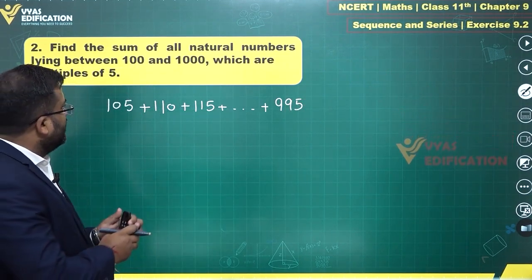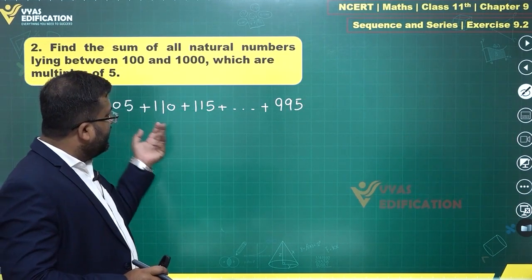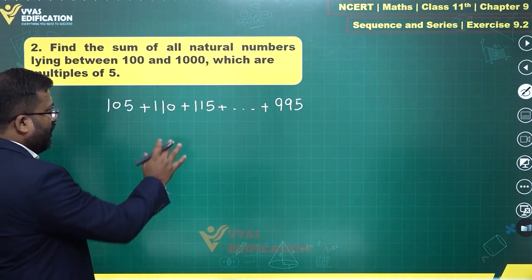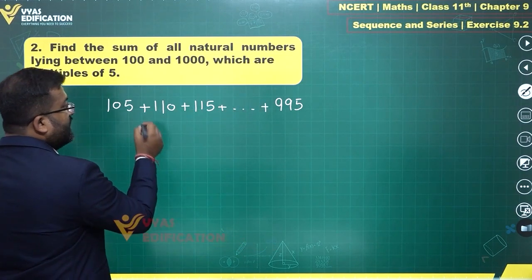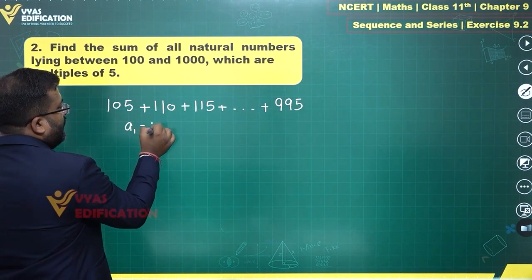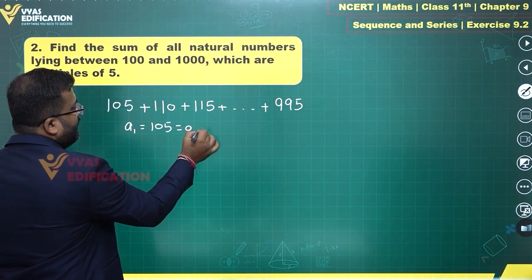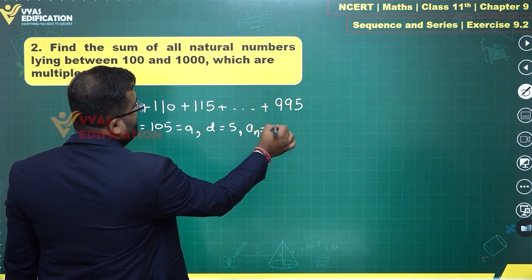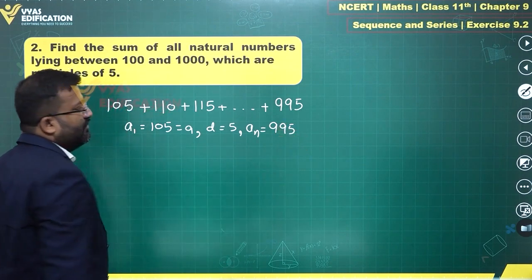If you observe, you know A1, you know the common difference and you know the last term. This is an arithmetic progression. A1 is 105, common difference D is 5, and AN is 995. You know these three things.